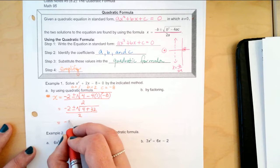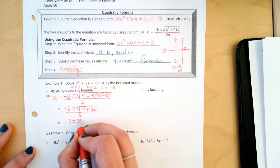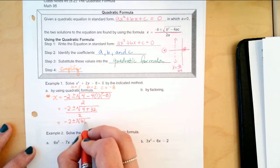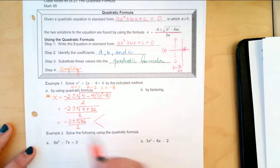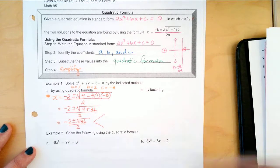Keep going. Negative 2 plus or minus the square root of 36 over 2. And we can simplify that because we are going to divide it up based on the plus or minus. So, what's the square root of 36?